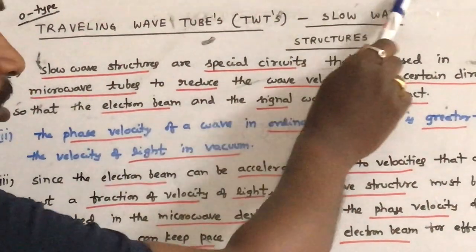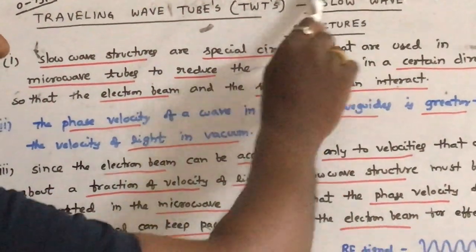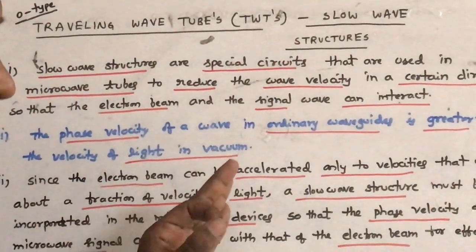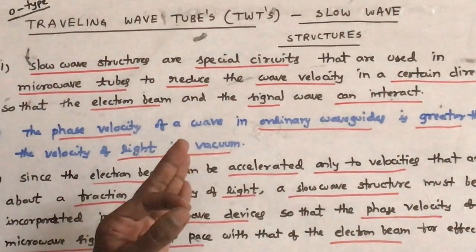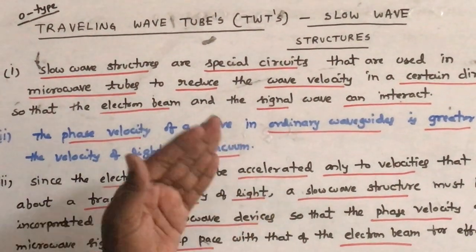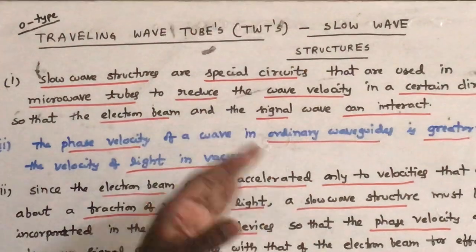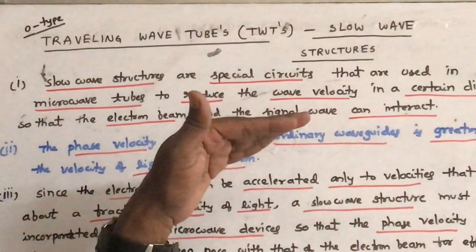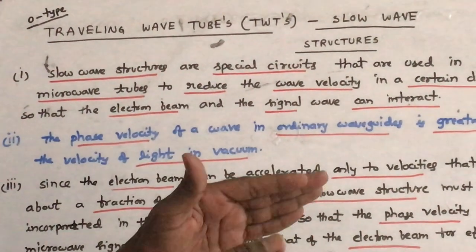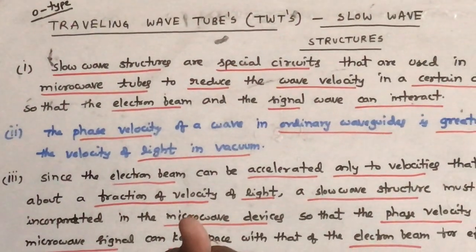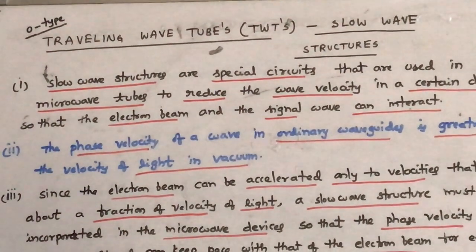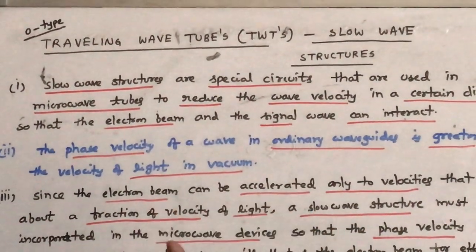In these travelling wave tubes, we use slow wave structures. Before going to the discussion of slow wave structures, let us discuss about two-cavity klystrons and reflex klystrons, which we have discussed earlier in the previous lectures. The two-cavity klystrons and reflex klystrons are linear beam tubes or O-type tubes. The basic mechanism is the interaction between the RF signal and the electron beam. The electron beam transfers its kinetic energy to the RF signals to make either an amplified signal or to make sustained oscillations in both two-cavity klystrons or reflex klystrons.